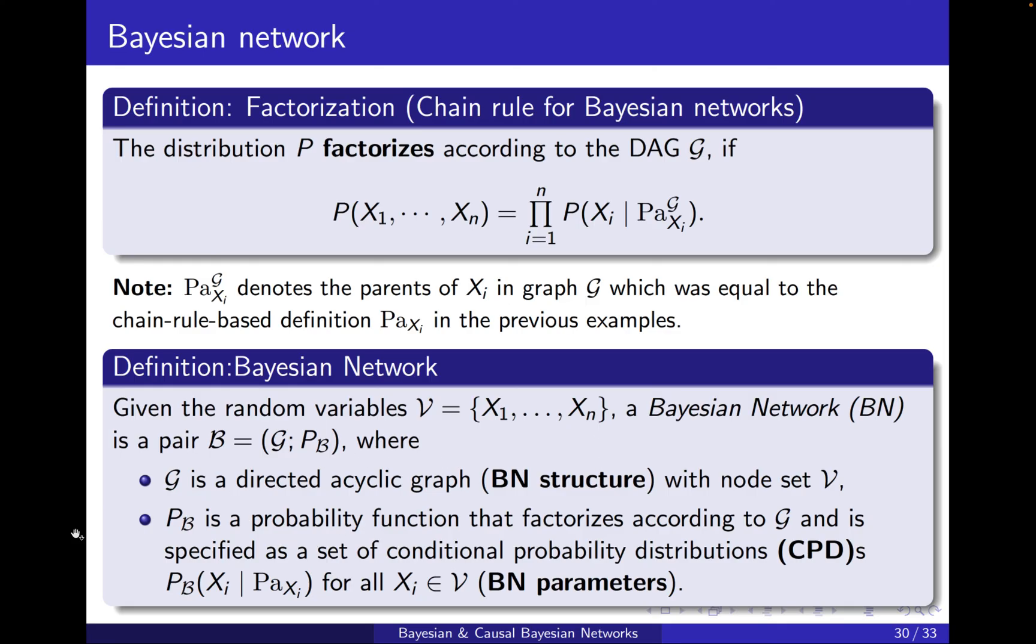The probability function pb is basically a probability that factorizes according to this graph and is specified with the CPDs, P(xi | parents of xi), which are known as the Bayesian network parameters. So we have a Bayesian network structure, which is the graph. We have Bayesian network parameters, which are the CPDs.